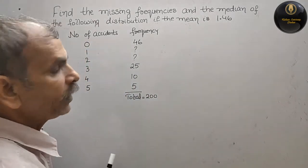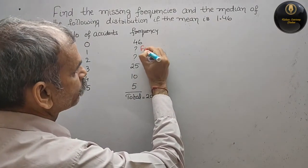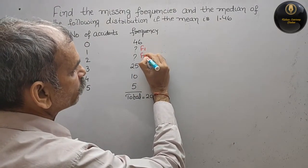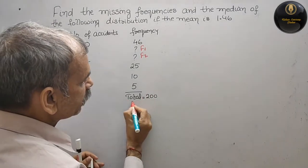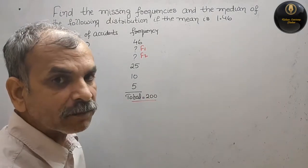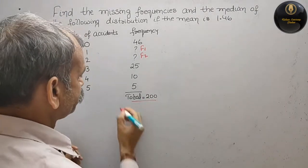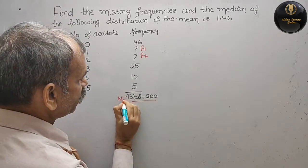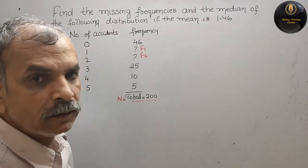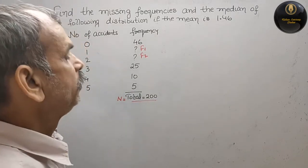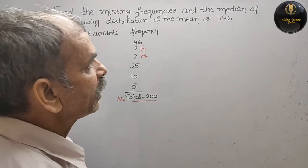Now we will name them. So this is your f1 and this is your f2. And here total they have given you 200. That means this is our n, n is equal to 200.